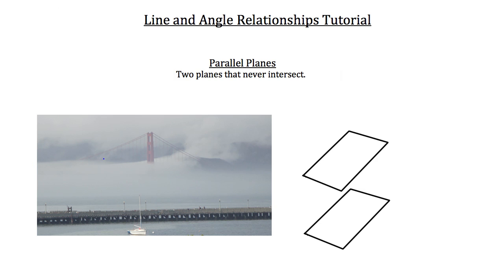There are a couple pairs of parallel planes in this picture. The first is the flat plane of the bridge running along this direction. That bridge is exactly parallel to the water below it — they're both flat and running left to right across the image, and they're never going to touch each other. The bridge plane is elevated above the water plane and they run exactly parallel. The bridge plane will just continue out straight over the top of the water plane.